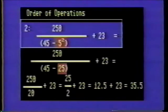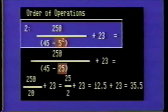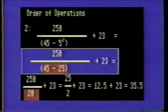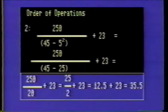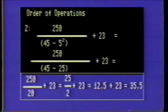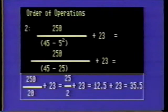Number 2: 250 divided by 45 minus 5 squared plus 23. Carry out the operations inside the parenthesis first. 5 squared has the highest order of operation inside the parenthesis, so 5 squared is 25. Next, solve for 45 minus 25, which is 20. Then divide 250 by 20. Remember that 250 is the same as 25 times 10, and 20 is the same as 2 times 10. Thus, 10 cancels out, and 25 divided by 2 results, which is 12.5. Adding 12.5 to 23 yields 35.5.